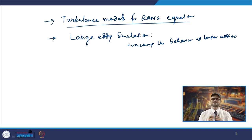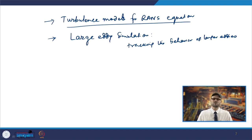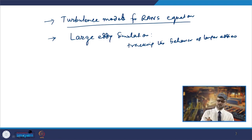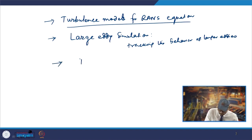The computational resources required for LES are more than those used for turbulence models like k-epsilon. This is the second category. Recently, Direct Numerical Simulation (DNS) is also used.